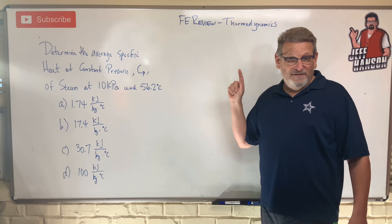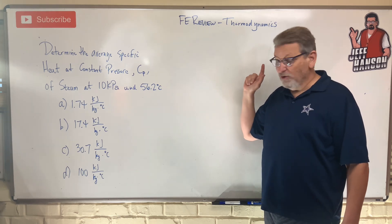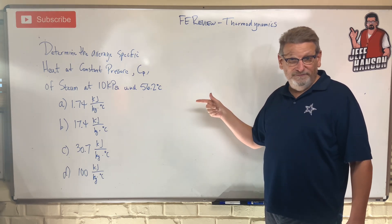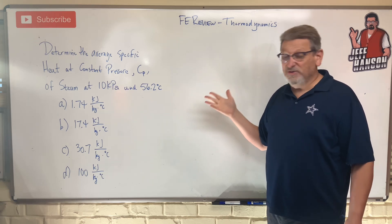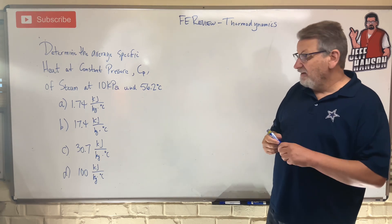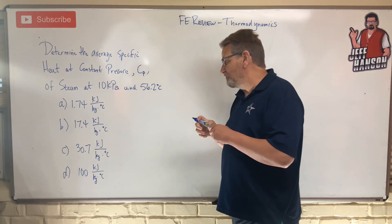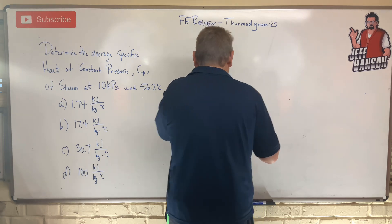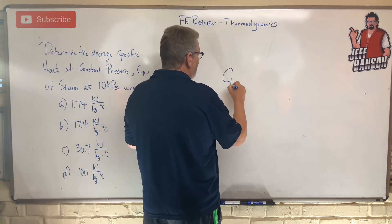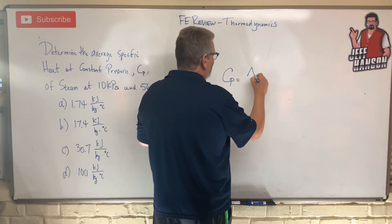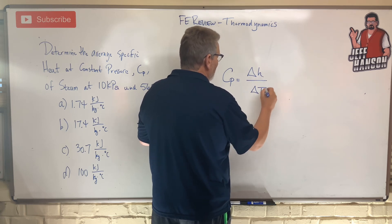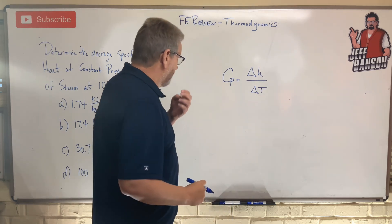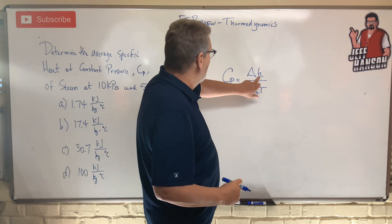Push pause and I'll show you how to do it. This one's pretty easy if you can use your steam tables. We have saturated steam, and we're going to use the equation: cp is equal to delta h divided by delta T.